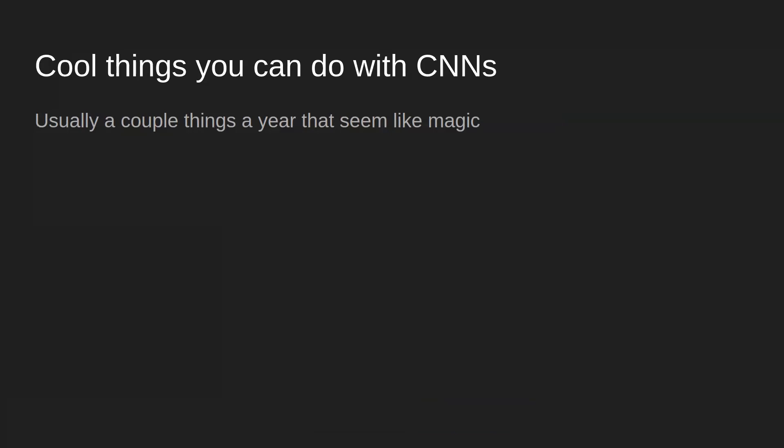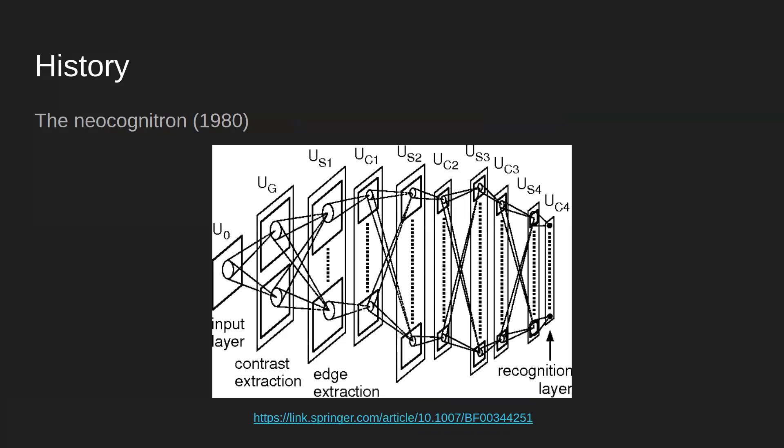To explain why CNNs are the way they are, a bit of history: the Neocognitron, mentioned earlier, is built on the idea that artificial neural networks should be informed by the visual cortex when designing models for visual tasks.